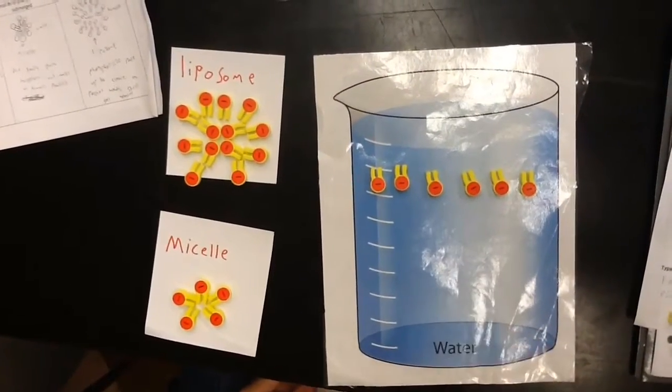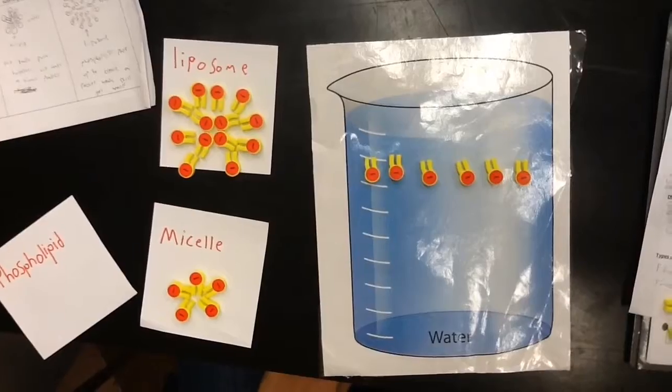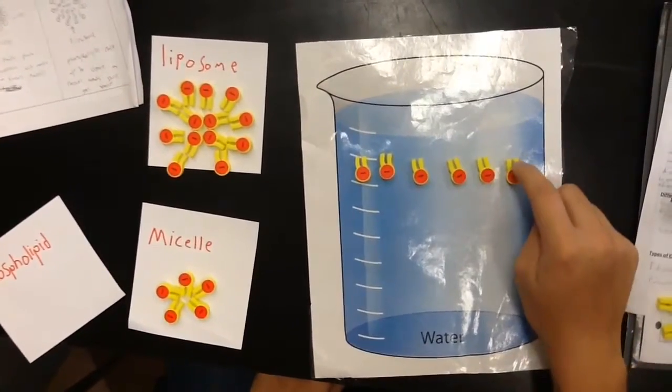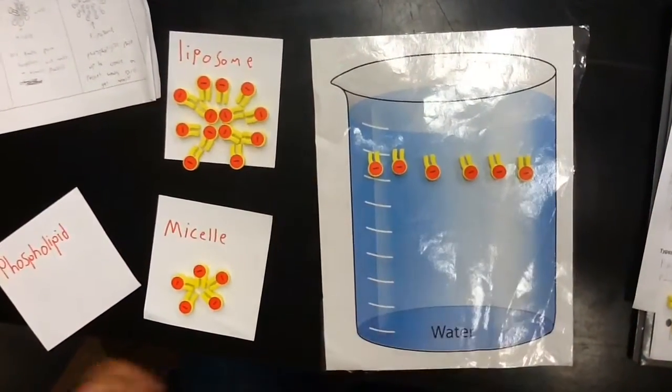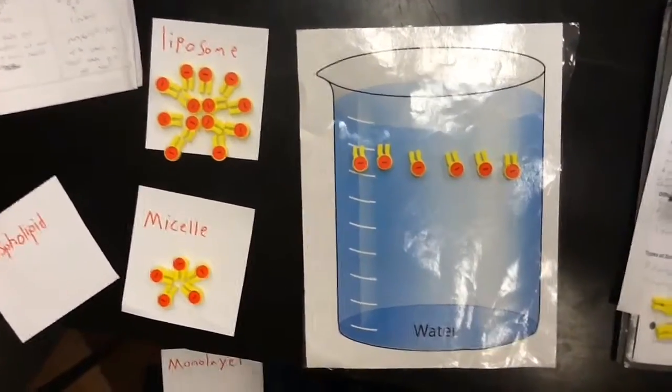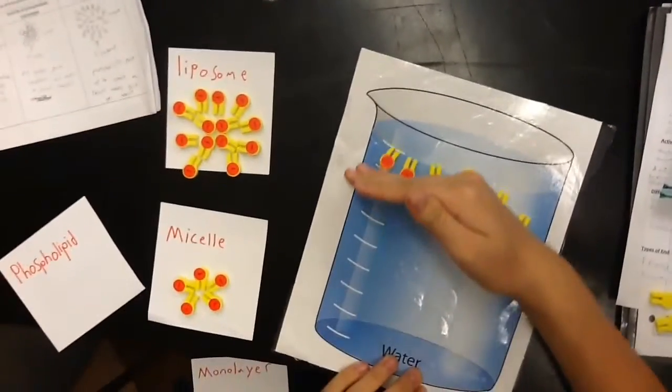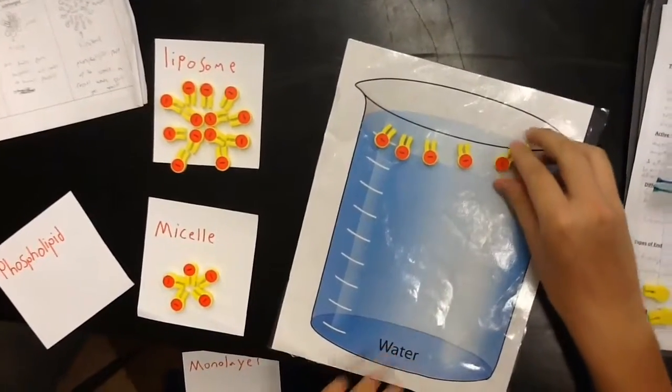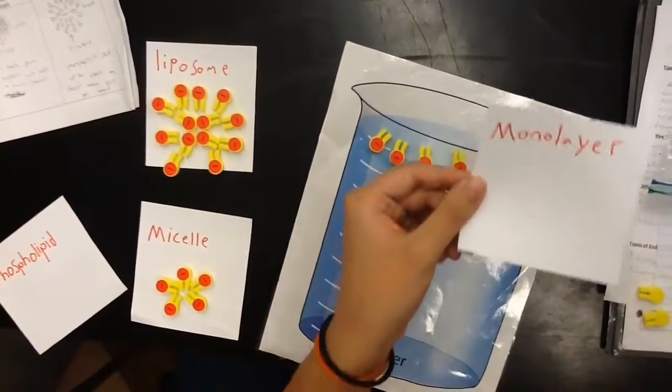And on the surface of it, the tails of a phospholipid is hydrophobic though, meaning they are scared of water and resist it, like two negative sides of a magnet. This leads to the tails sticking straight up out of the water, and the heads are submerged. This form of having the heads in the water and the tails in the air is called a monolayer.